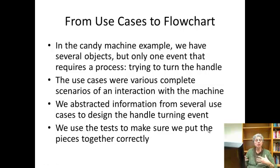So think about the relationship between the use cases and this flow chart, because the setup is pretty different. We only have one event that requires a process, trying to turn the handle. Now, trying to turn the handle was an element in each of our use cases. And the setup was different for each use case, and the outcome was different. So what we did was abstract information from several use cases to design this event of trying to turn the handle.